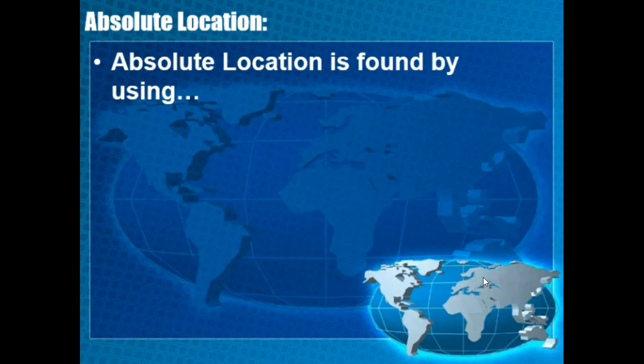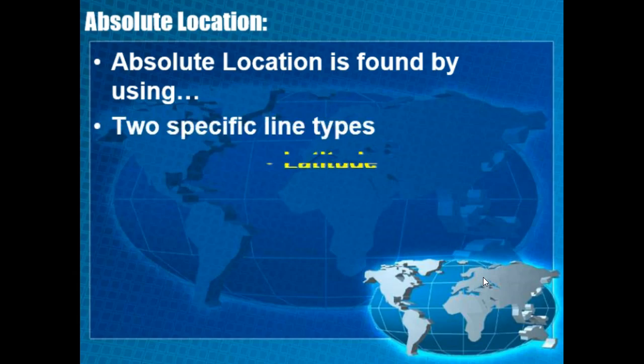How do we find an exact place on earth? We find it using two specific lines — the first being latitude and the second being longitude. We're going to get into more specifics about latitude and longitude in another video. Just know that absolute location is an exact place on earth. In a city context like El Paso, absolute location would be a specific address.